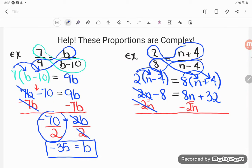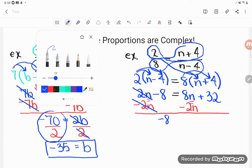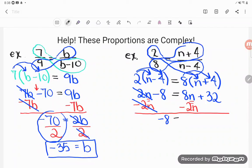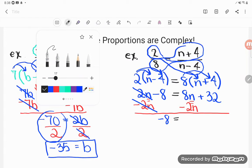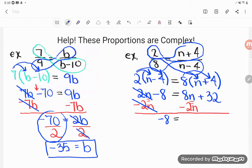2N minus 2N zeros out. 0 minus 8 is negative 8. That's equal to what I get after making that same change on the right-hand side. 8N minus 2N is 6N, and I haven't done anything to that plus 32, so it remains there. Now I have a two-step equation.